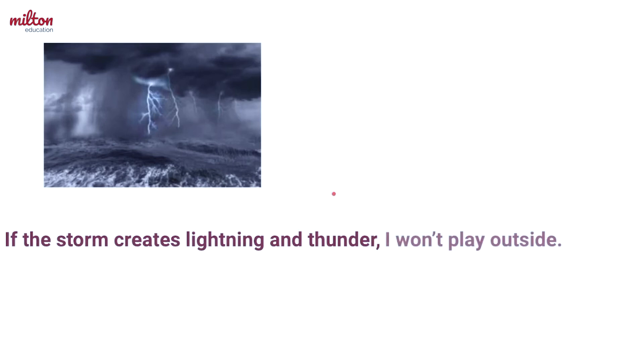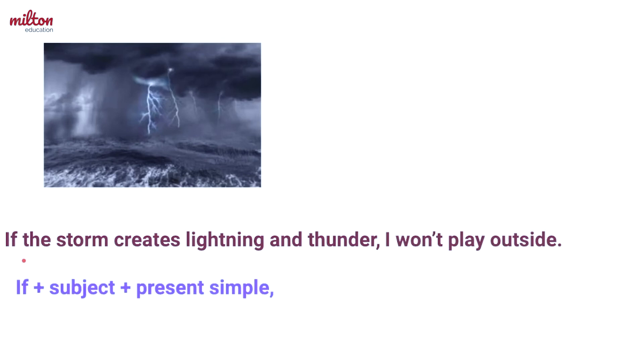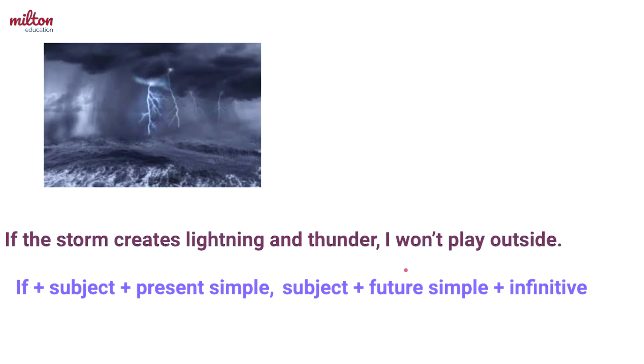Let's take a look at another example. I just read the news and it said that there's a good chance there will be a thunderstorm tonight. I wanted to play basketball and run outside with my friends, but: "If the storm creates lightning and thunder, I won't play outside." Notice that the sentence uses the negative form of the future simple. The negative form of the future simple is "won't" — you can also say "will not."